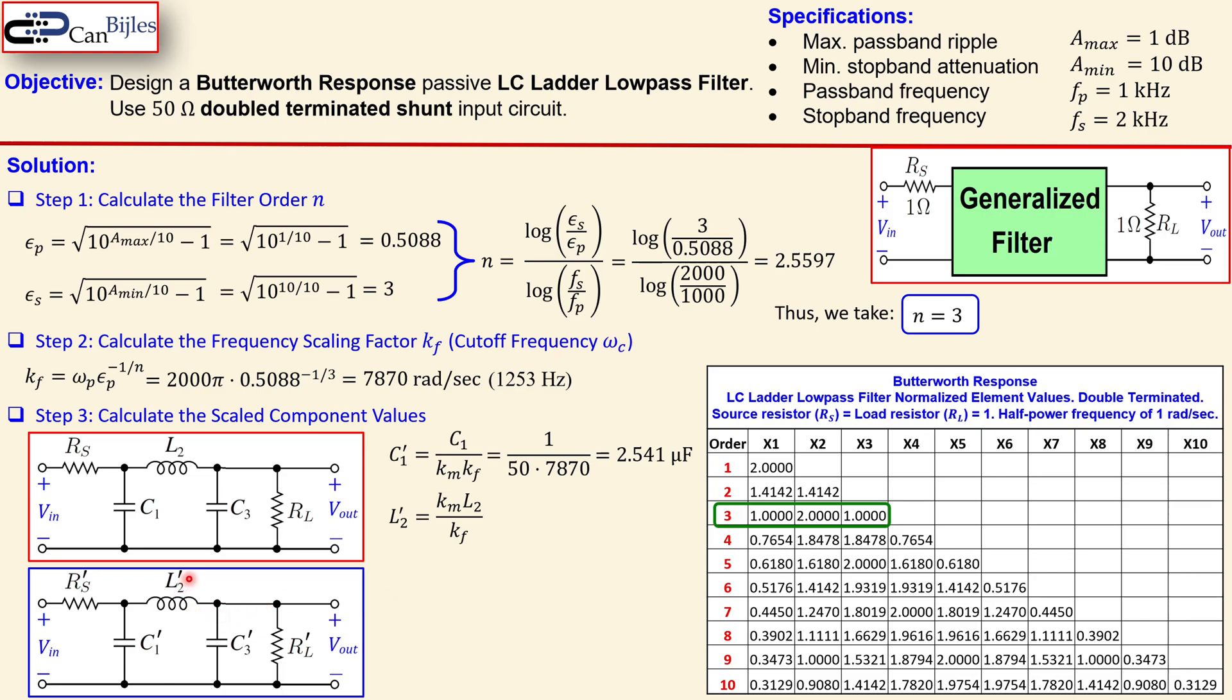Now when you do the calculations you get this 2.541 microfarads. The L2 prime is the K_m over K_f times L2. This is just the scaling formulas for the inductors and the capacitors. Again, 50 for the K_m and also for K_f is the value already calculated, but now this is now 2, you see that here in the row here, and now we need to calculate, you get 12.71 millihenry.